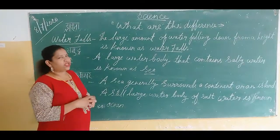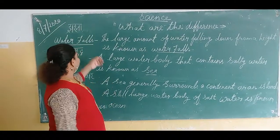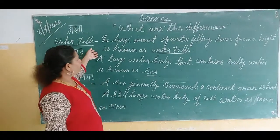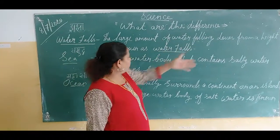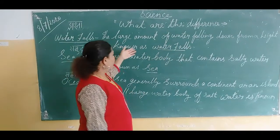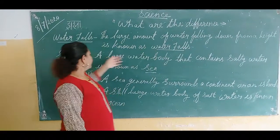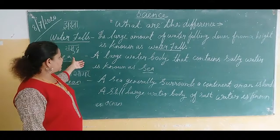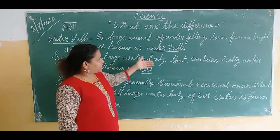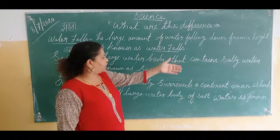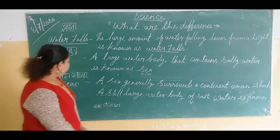One second, I repeat it. Part of waterfall: a large amount of water pouring down from a height is called a waterfall. The next is sea: a large body of water that can be designed to work up, is also along the sea.